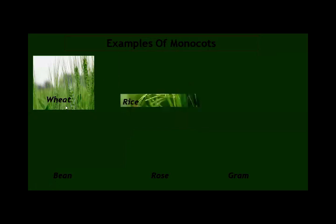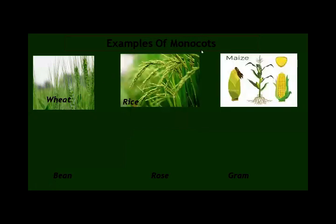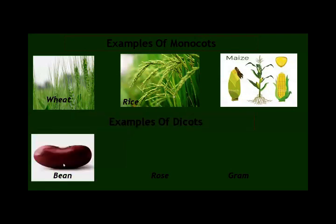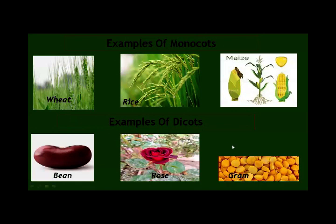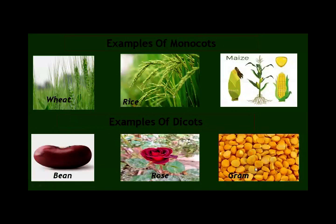There are some examples of monocotyledons: wheat, rice, and maize. And the examples of dicotyledons are: bean seed, rose, and bran. These are the examples of monocot and dicot plants.